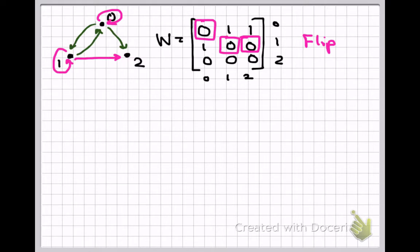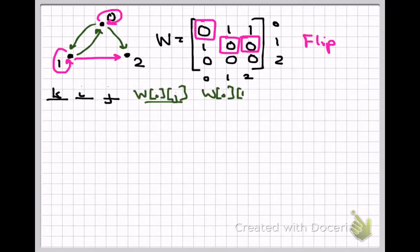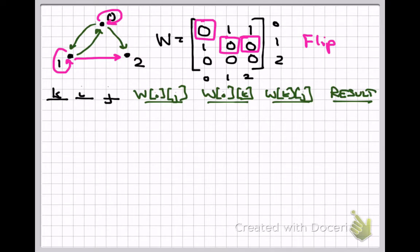We'll step through Warshall's algorithm line by line to see how it manipulates the matrix entries. The algorithm consists of a triple for loop that loops through k, then i, then j, in this case from 0 to 2. Every iteration looks at the (i,j) entry, the (i,k) entry, and the (k,j) entry. The (i,j) entry is set to 1 if either it was already 1, or if both the (i,k) and (k,j) entries equal 1 — computed as (w[i][k] AND w[k][j]) OR w[i][j]. Once the (i,j) entry is set to 1, it remains 1 in all subsequent iterations.